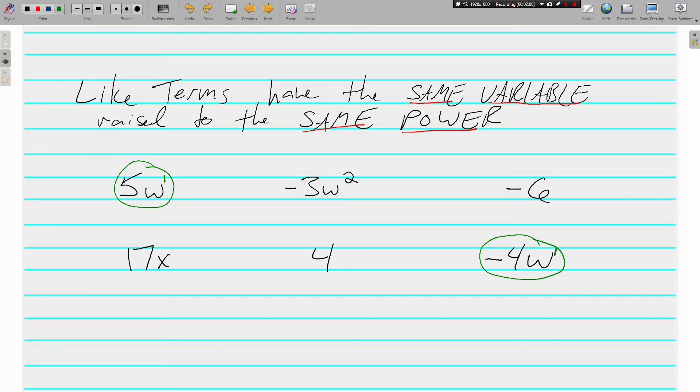They are not alike with the negative 3w to the second power. I know they both have a w, but this is w to the second power, whereas the green ones are just w to the first power. And in order to be alike, it has to be same variable raised to the same power.